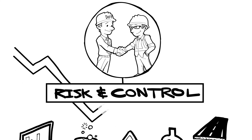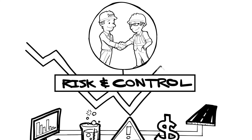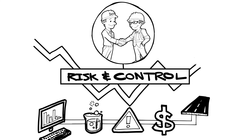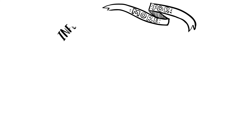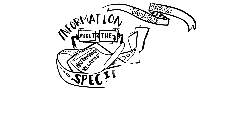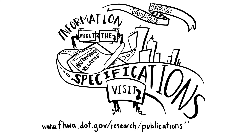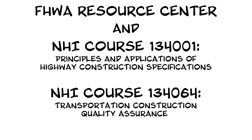As compared to conventional quality assurance specifications, performance-related specifications represent a shift toward providing pay that is commensurate with expected performance, and a further shift of risk and control from agency to contractor. To learn more about performance-related specifications, visit our website at fhwa.dot.gov/research.